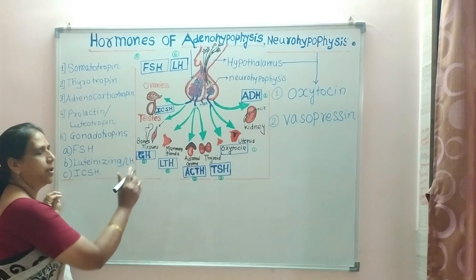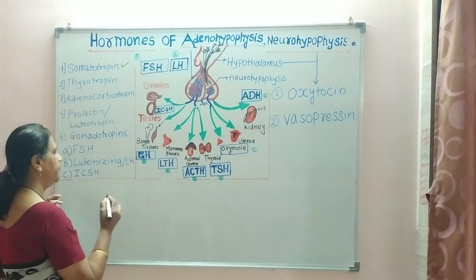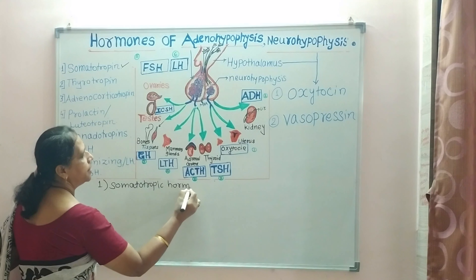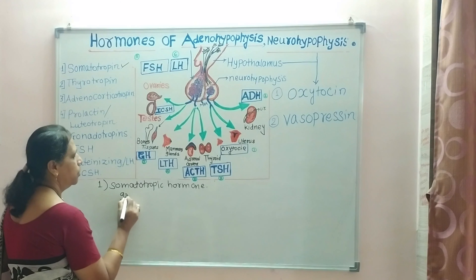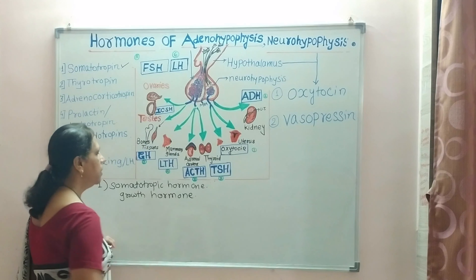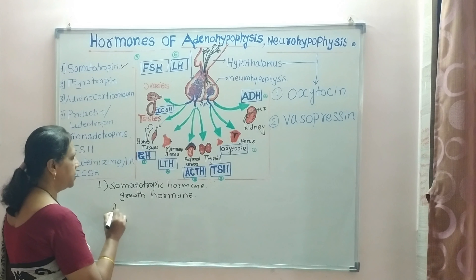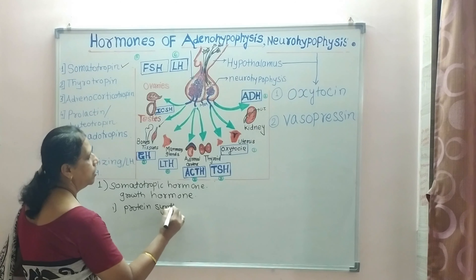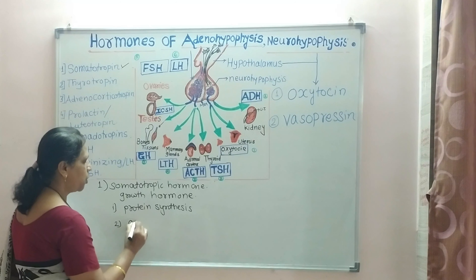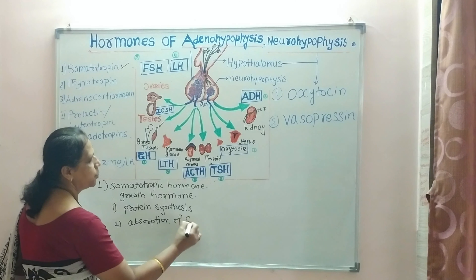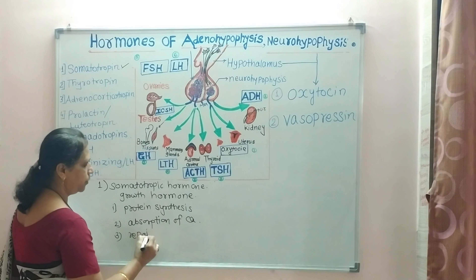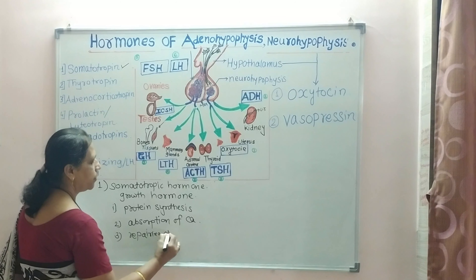The first hormone is growth hormone, also called somatotropin or somatotropic hormone. It causes growth and development of the body. It carries an important role in protein synthesis and helps in the formation of bones. It also helps in absorption of calcium as well as in repairing of tissue.